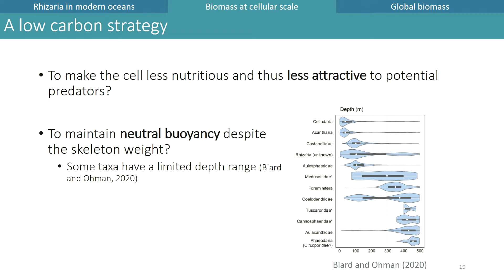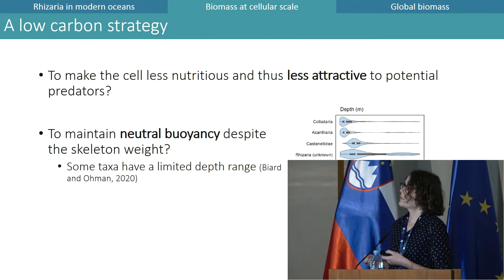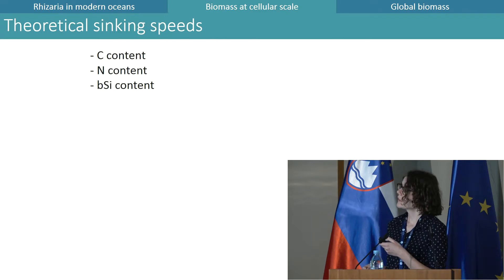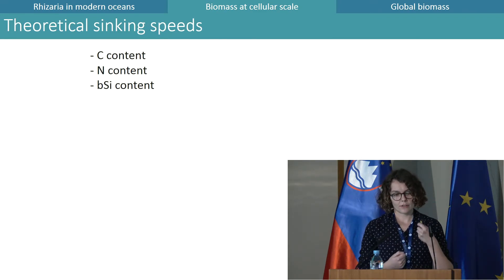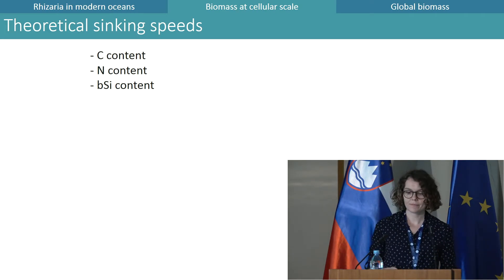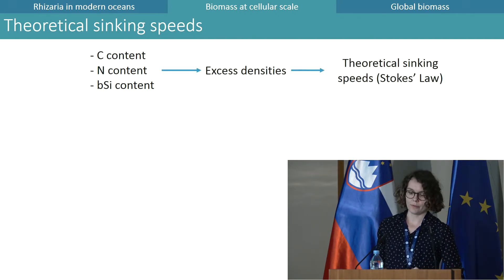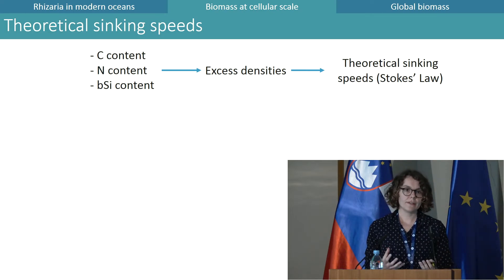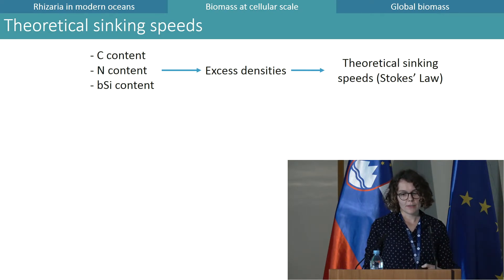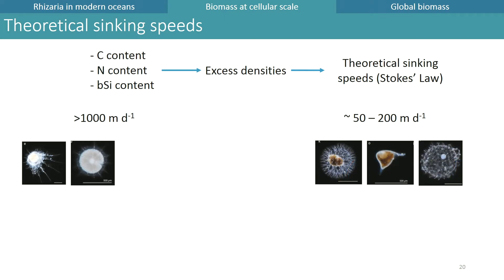We can further explore their role in the ecosystem by investigating how they contribute to fluxes of carbon and silica. Now that we have silica, carbon, and nitrogen contents for many Rhizaria taxa, we can calculate theoretical sinking speeds according to Stokes' law. When we performed this calculation, we observed a lot of variability among taxa and could distinguish two groups: high sinking speeds and low to moderate sinking speeds.